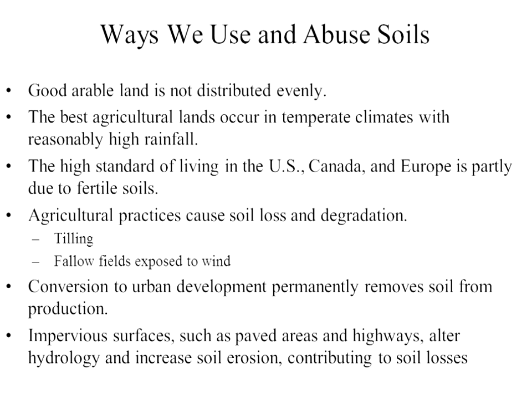Only about 11% of the earth's land area is currently in crop production. In theory, up to four times as much land could potentially be converted to cropland, but much of the remaining land is too steep, soggy, salty, cold, or dry for farming. So you can see how very little of our total land surface is actually good arable land.